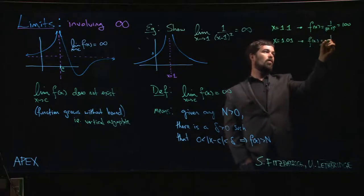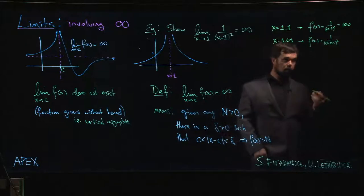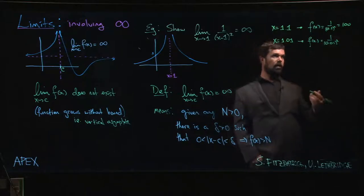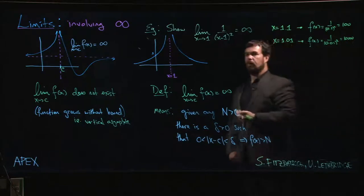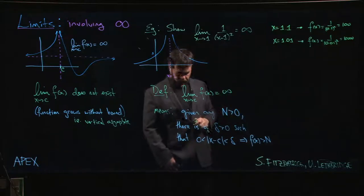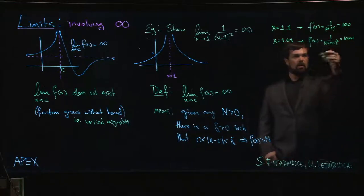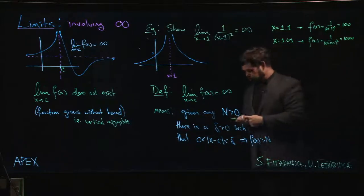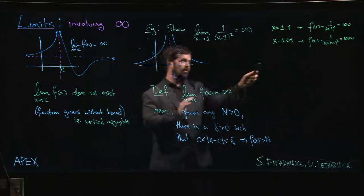And so on - 0.001 we're going to get a million. As we get closer and closer to 1, we can see that the function is going to get bigger and bigger and bigger. In fact, I can make this bigger than any power of 10 just by adding enough zeros after the decimal.